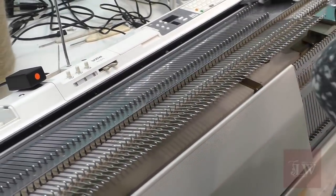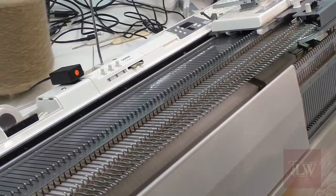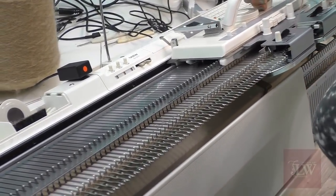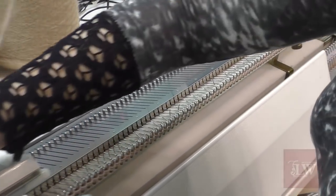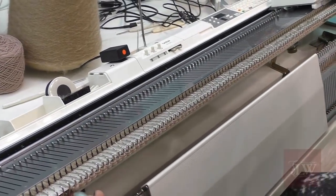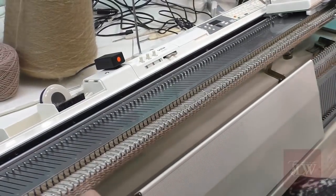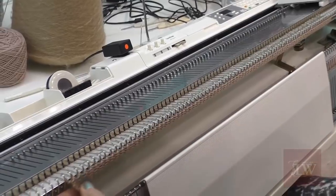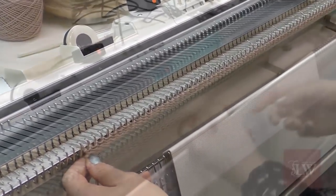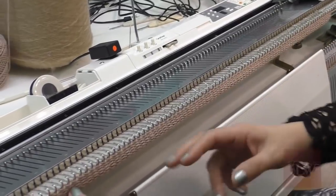For this particular yarn, I cast on 80 stitches on my bulky machine and I start knitting my scarf. I'm knitting it very loosely. See how loose it is? I'm going to knit 400 rows and then show you the next steps.